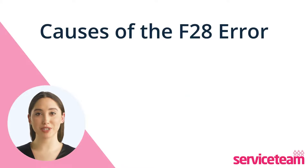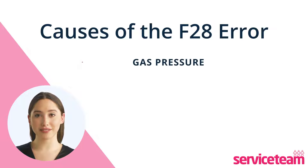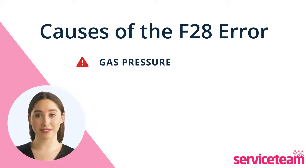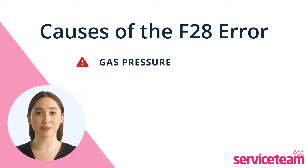Let's understand what causes the F28 error. The first cause is the gas pressure. Boilers, both new and old, can face issues like insufficient gas pressure. If your new boiler is more powerful and not working, the problem might be with the gas supply.